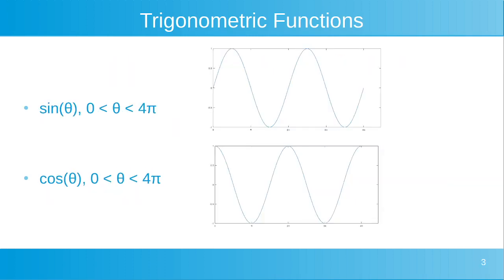To illustrate the repeating nature of trigonometric functions, here I'm displaying two charts: one at the top of the screen of the sine function, and at the bottom of the screen the cosine function. You can see in both graphs that as the value of the input angle increases, the value of the trigonometric function essentially begins to repeat itself — the same values are repeated over and over as the input parameter increases.